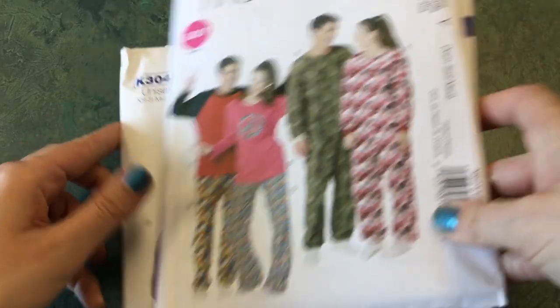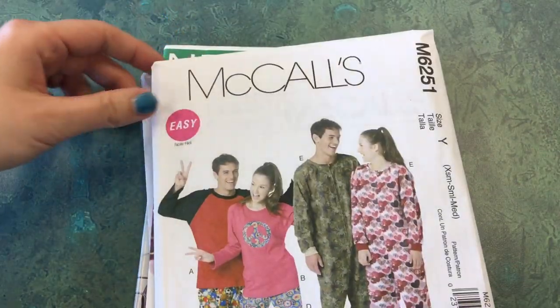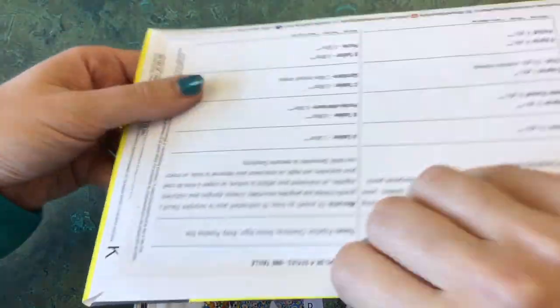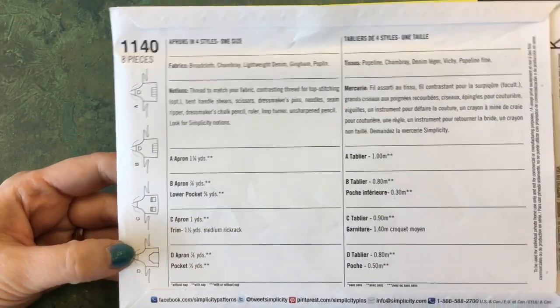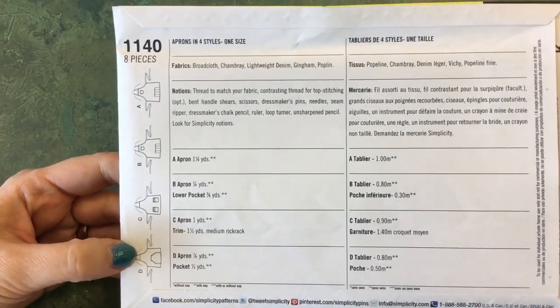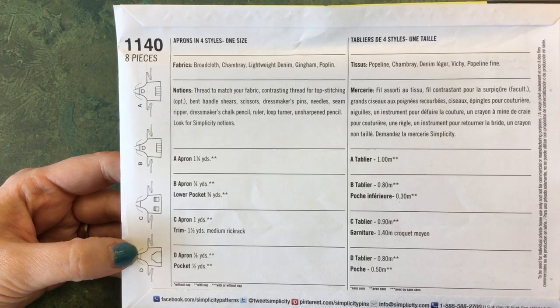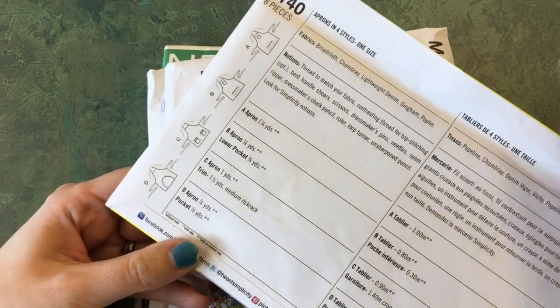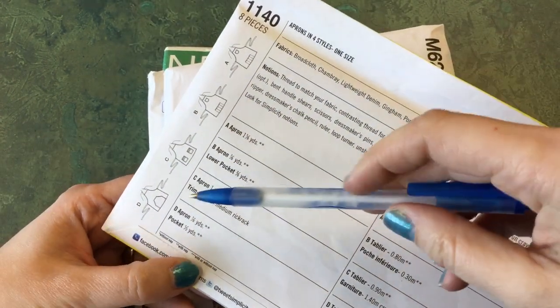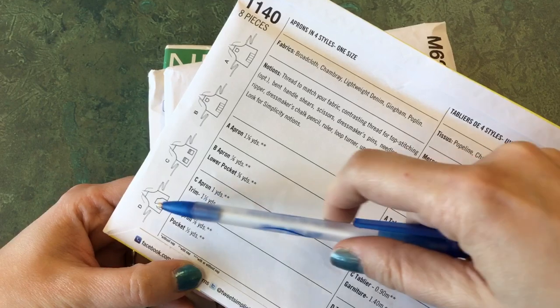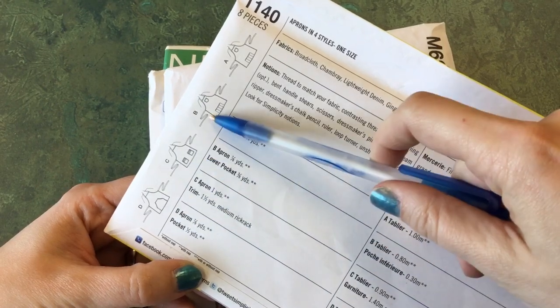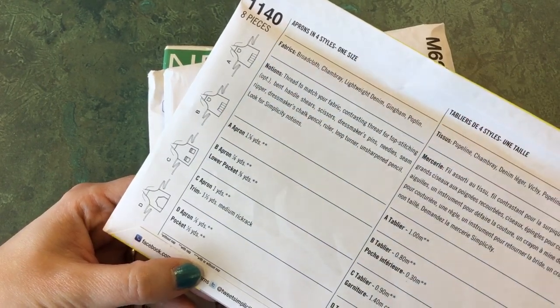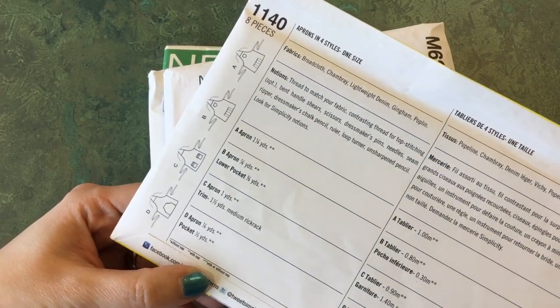Once you pull your pattern, you basically look at the back side and that is going to tell you a lot of information about what things you need. It will have what we call views, so the same pattern will make different arrangements or variations of the pattern.